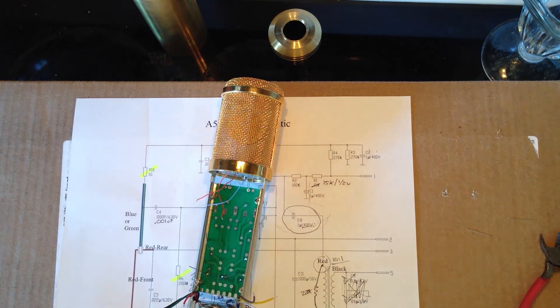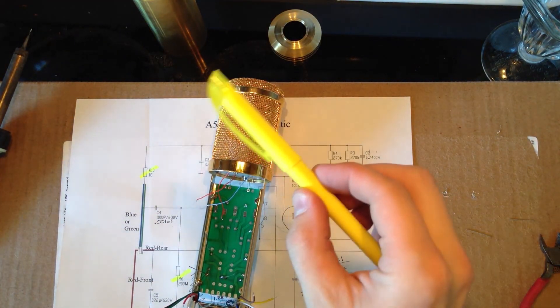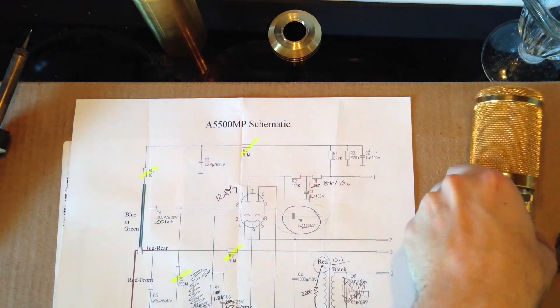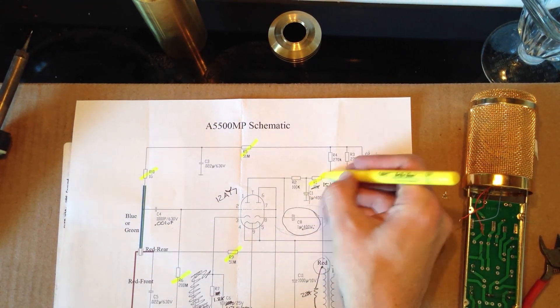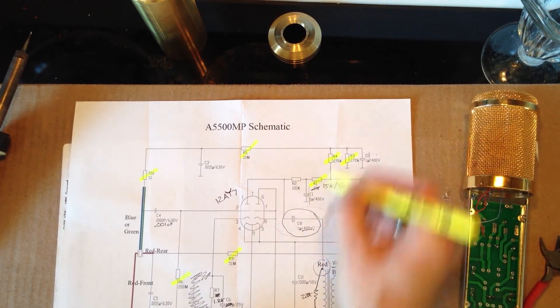So, now that those things are soldered on there, go ahead and clip them off. And we will grab our highlighter and mark off which ones we've done. So we just did R1. And we did R3 and R4.